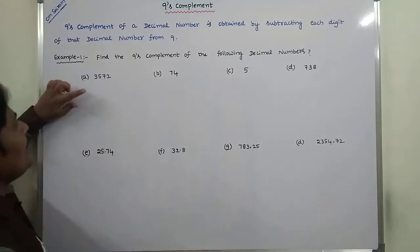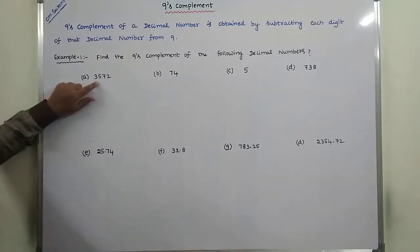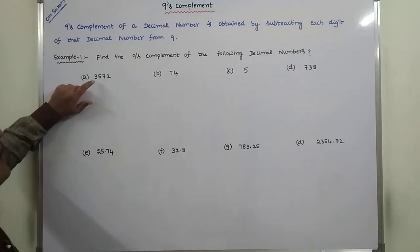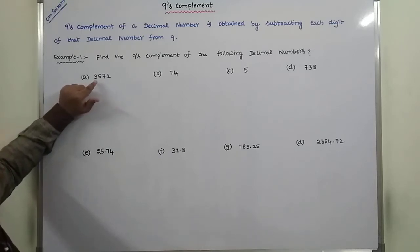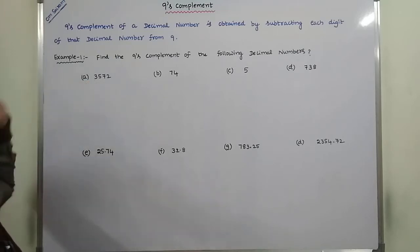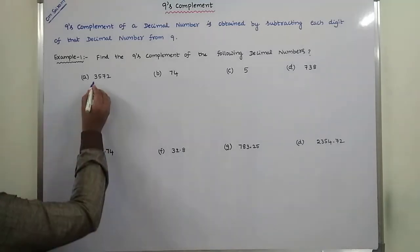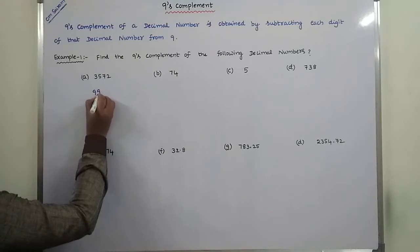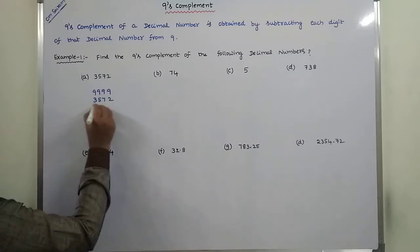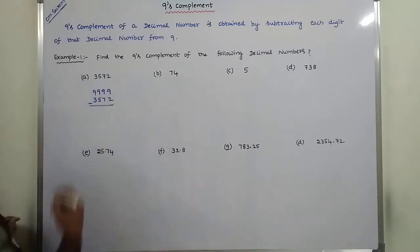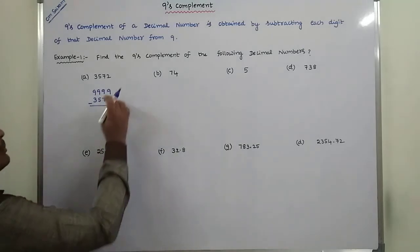For example, find out the 9's complement of this number. How many digits are there? Four digits are there. Each and every digit can be subtracted from 9, then we get the 9's complement of the given number. So four digits — we take four 9's and subtract each digit from 9.